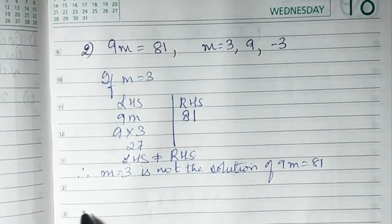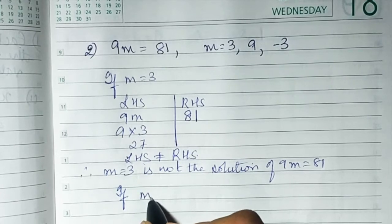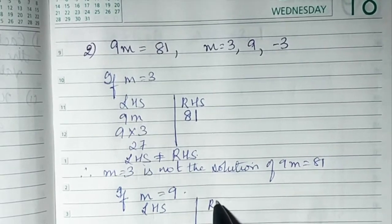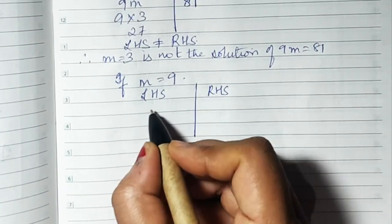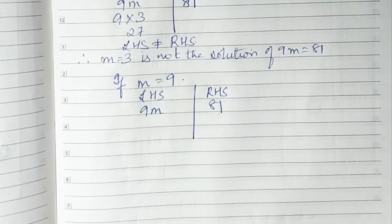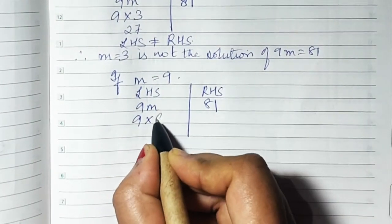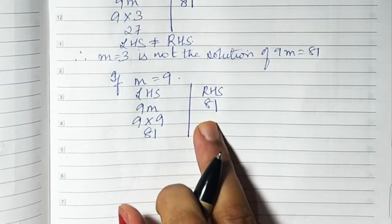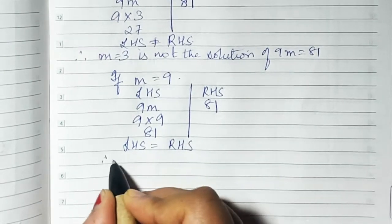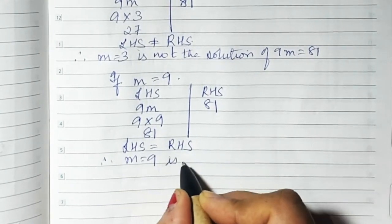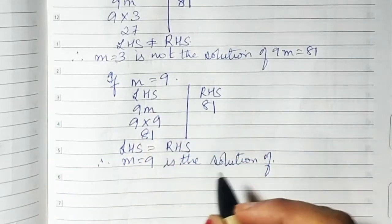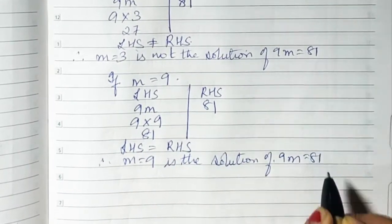The second value is M = 9. LHS is 9M and RHS is 81. Substituting M = 9: 9 × 9 = 81. LHS equals 81 and RHS equals 81, so LHS is equal to RHS. Therefore, M = 9 is the solution of 9M = 81.